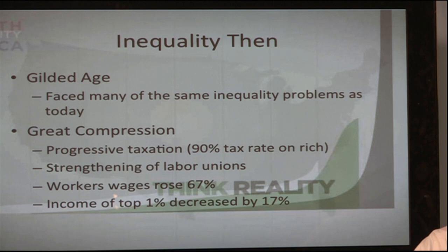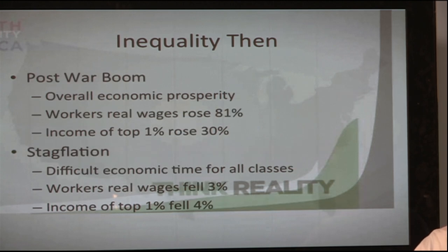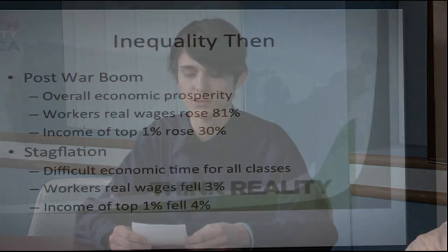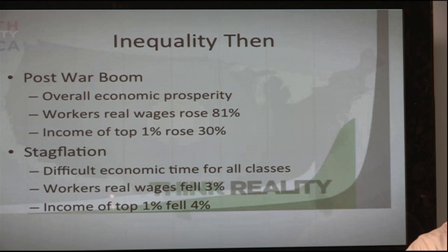Around the early 1940s was the Great Compression — a period of economic reform that sought to develop the middle class through implementation of welfare and other policies. During this period, income of the working class increased by 67%, and progressive taxes were put in place, with the tax rate for the wealthiest portion of Americans at 90%. Following that was the post-war boom after World War II, with an increase of jobs, workers' real wages rising 81%, and income of the top 1% rising 30%. All economic and social classes saw economic prosperity at this point.